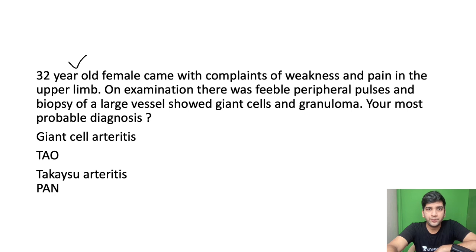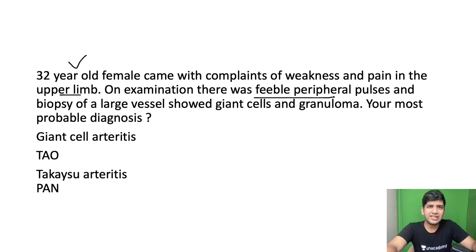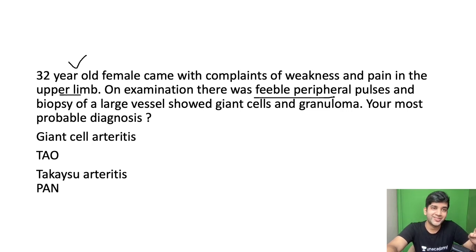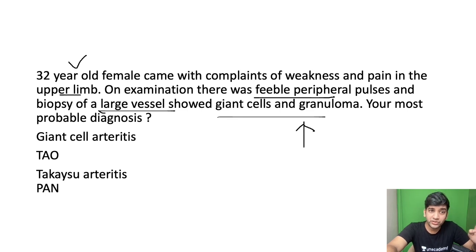A 32-year-old female presents with weakness in the upper limb and feeble peripheral pulses. This would give a very clear diagnosis. Feeble peripheral pulse — I'm sure all of you must have first thought about pulseless syndrome. The biopsy of a large vessel showed giant cells and granuloma. What's your most probable diagnosis?